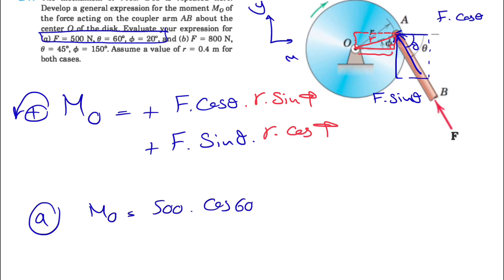Our theta is 60 degrees, r is 0.4, and sine of 20 degrees. That's the first part, plus 500 sine of 60 degrees times 0.4 cosine of 20 degrees.